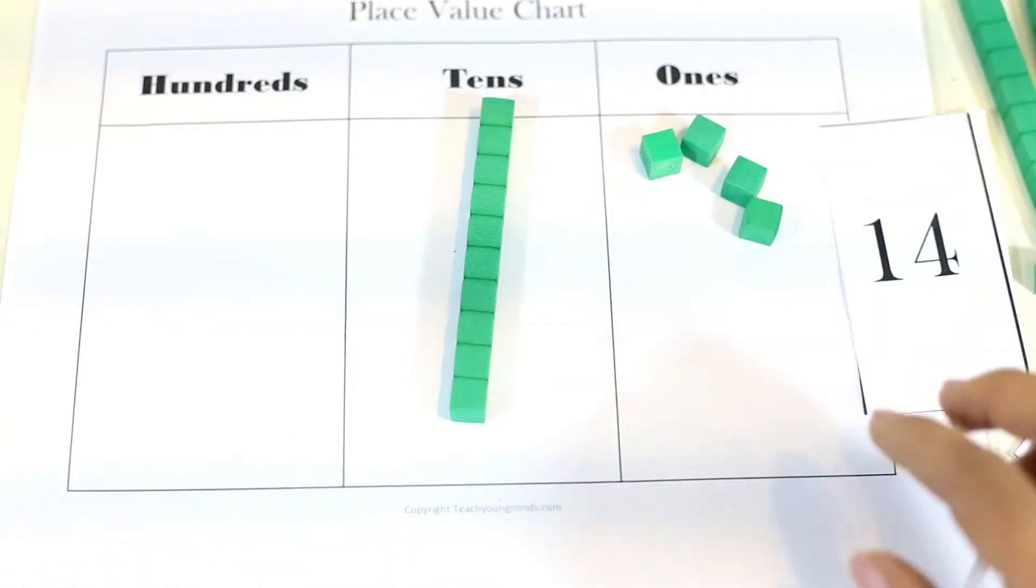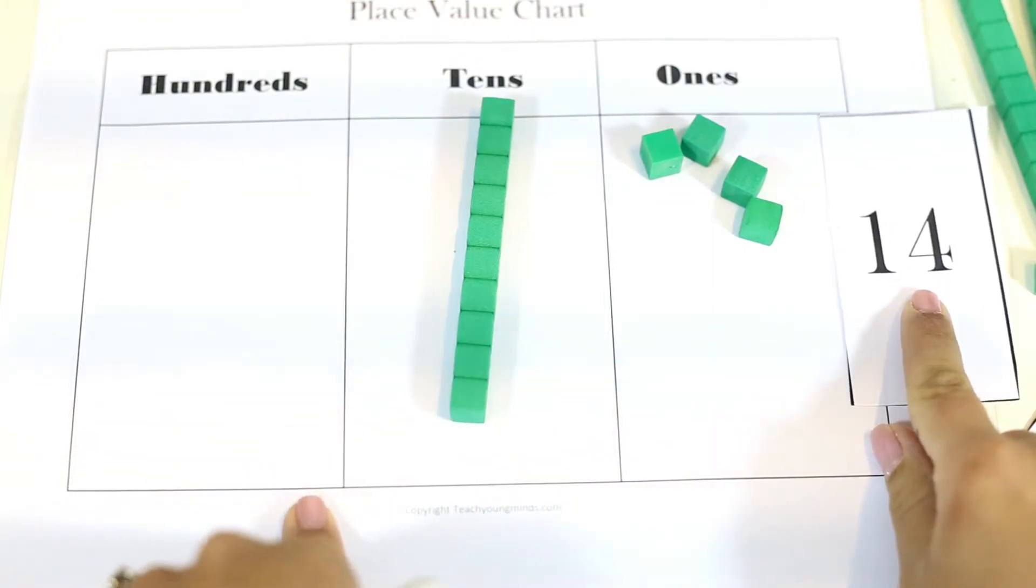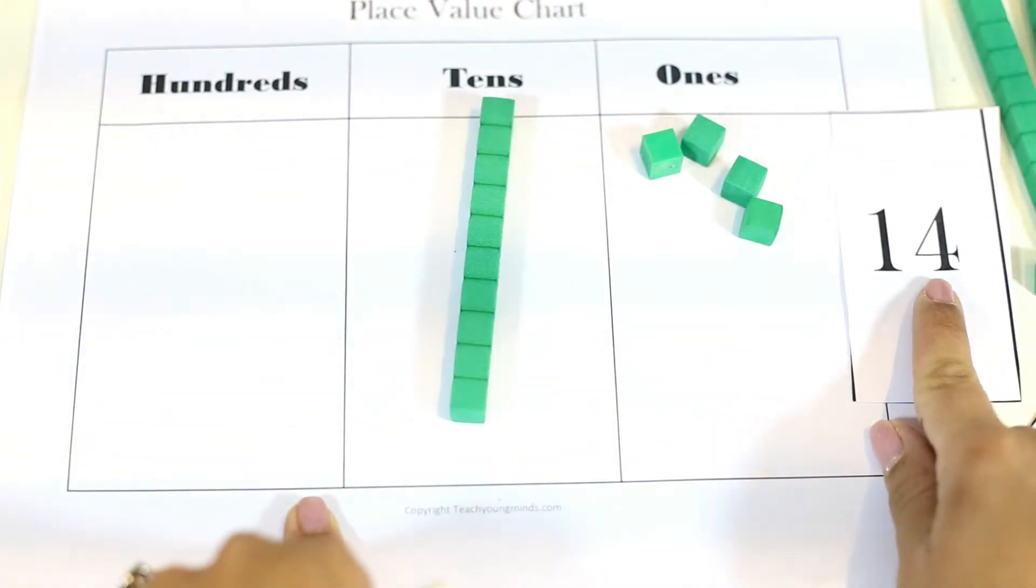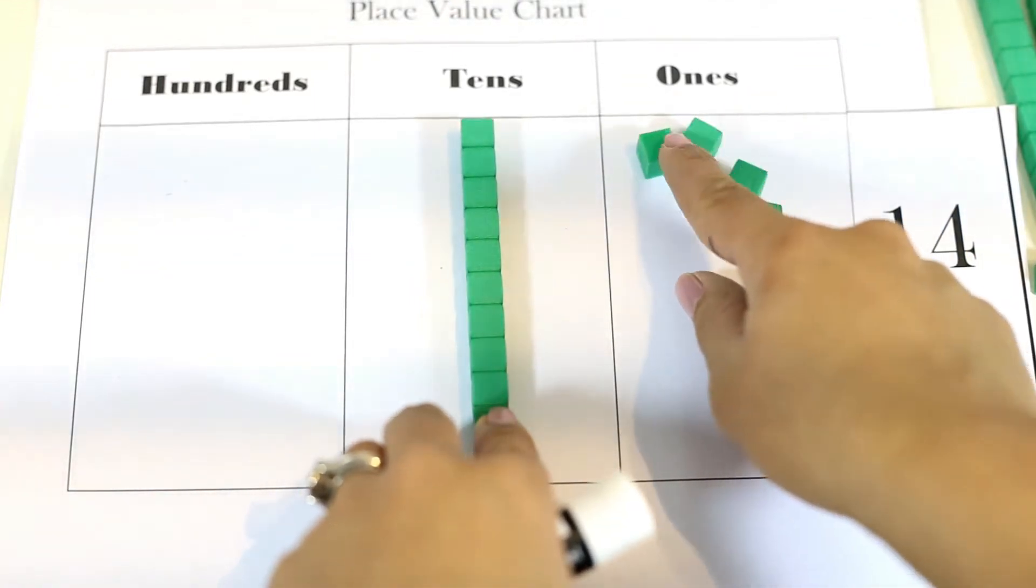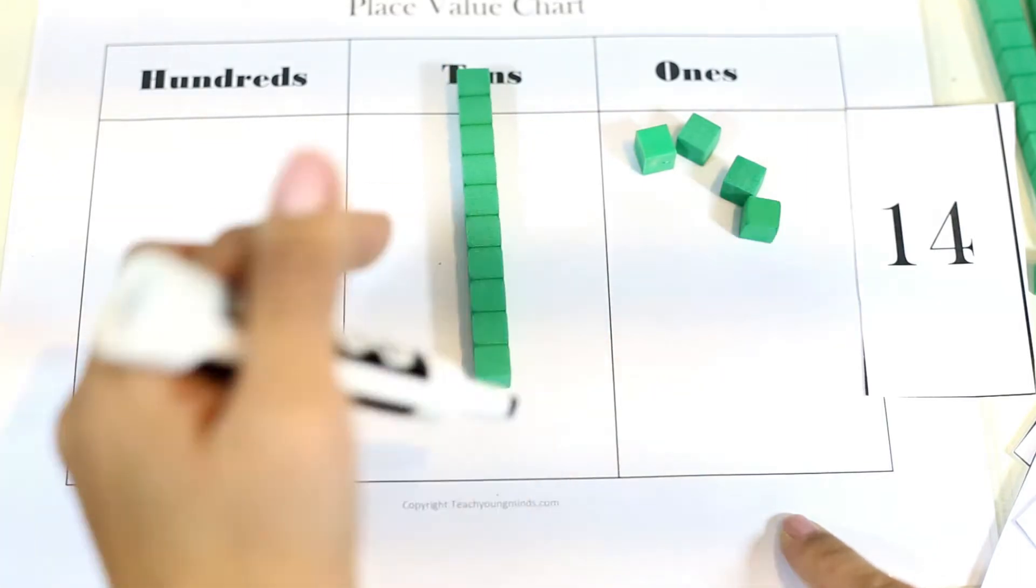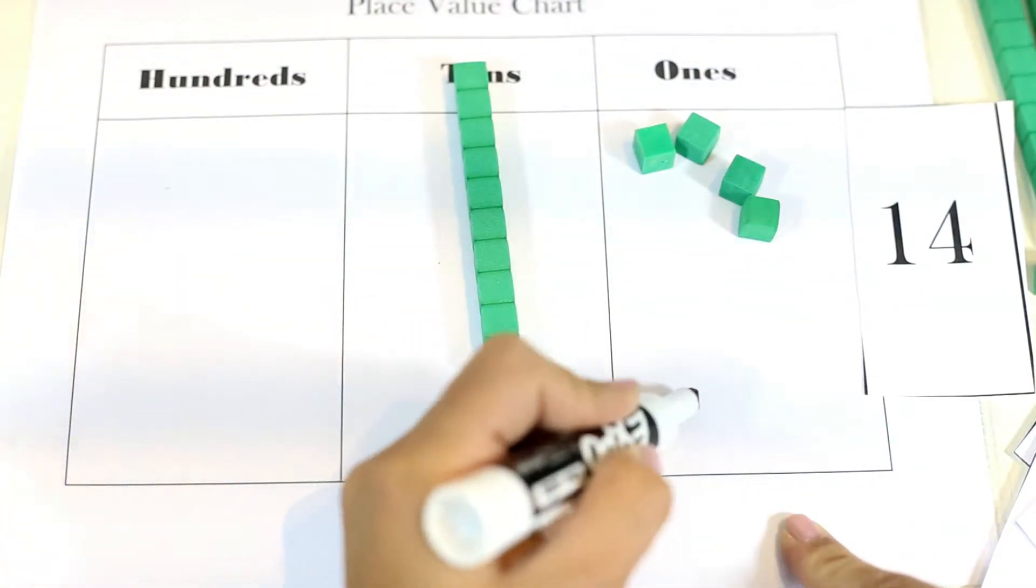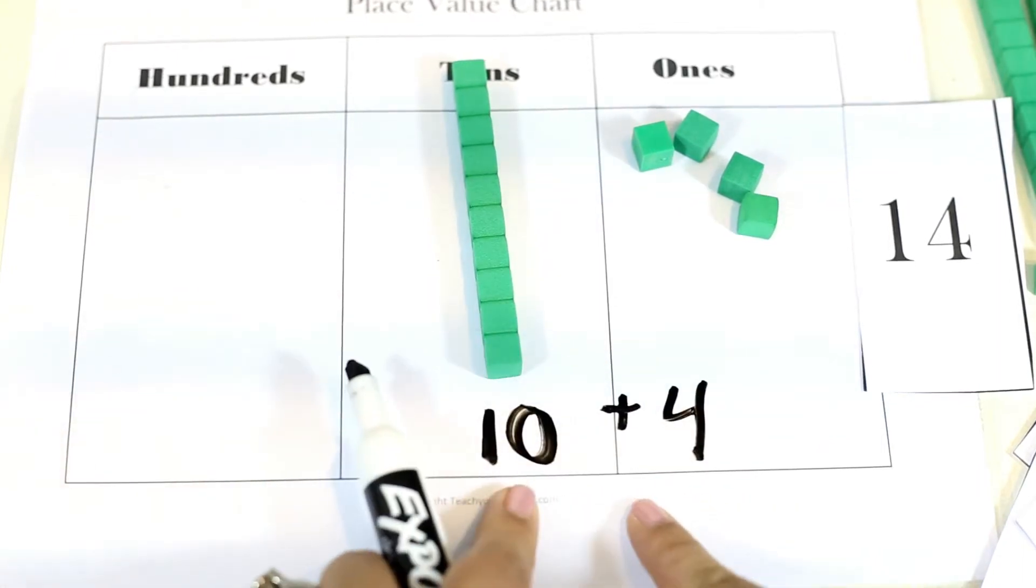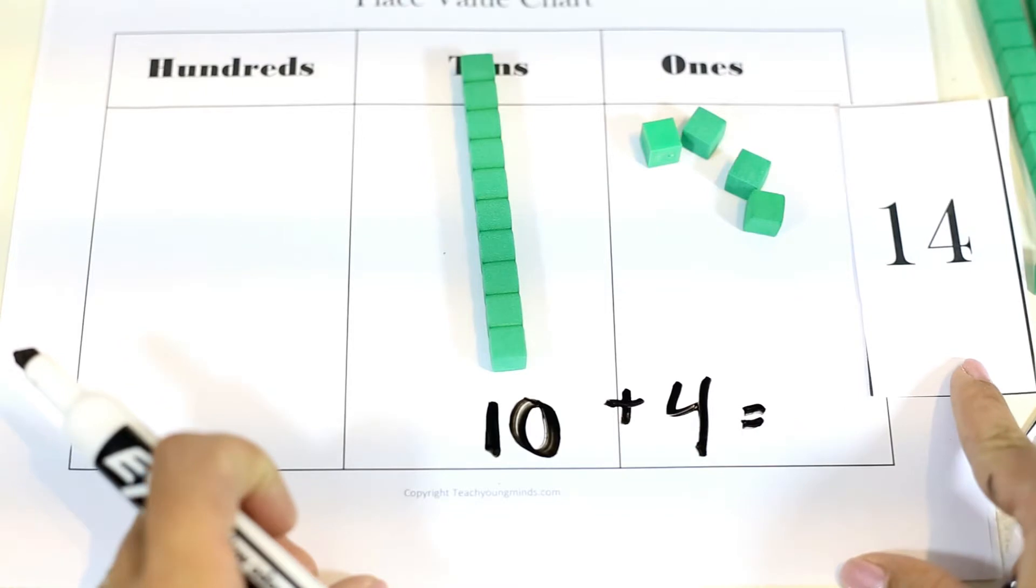I can also show them how to build it in the expanded form. This is one way to show the number 14, the numerical way. Then we have using a picture this way. Or we can do it using the expanded form. So 10 plus 4. And that's the expanded way to show 14.